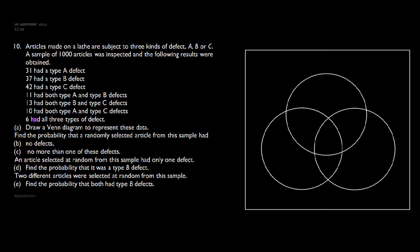We always start in the middle where we have all three because that makes life easy. We can write that one straight in. So let's label our bits of the Venn diagram. This is going to be defect A, we're going to put defect B on this side and defect C over here, and we know that 6 had all three.